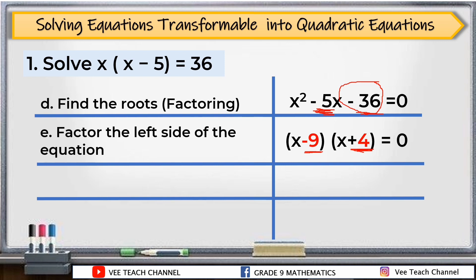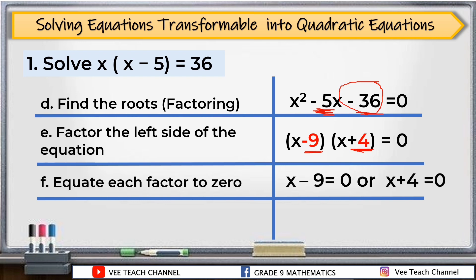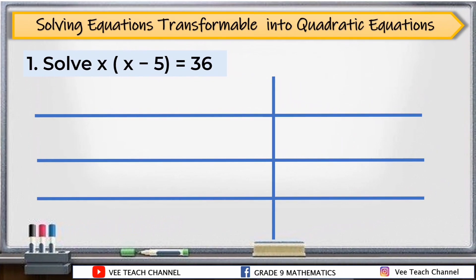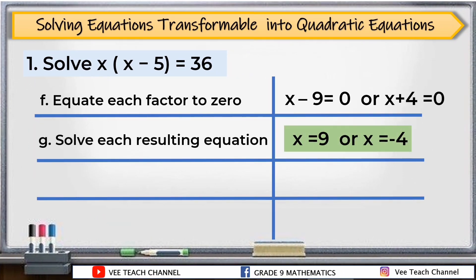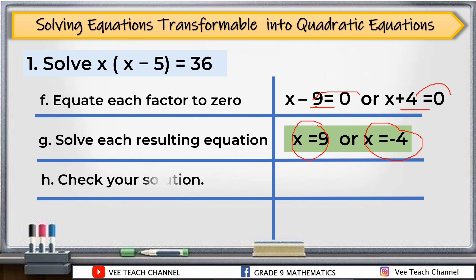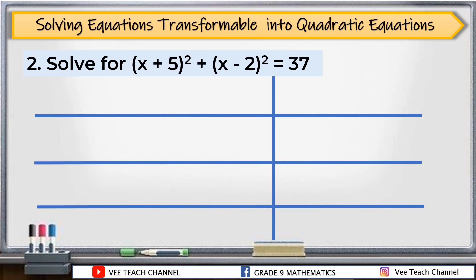After getting the factors, the next step is to equate each factor to 0: x minus 9 equals 0, or x plus 4 equals 0. Then solve for x. Applying the addition property of equality, x equals 9 and x equals negative 4 — transposing each constant to the other side and changing its sign. You can then check your solution by substituting the value of x into the original equation.